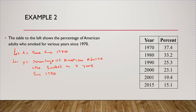I'm going to leave the percentage as-is rather than converting to a decimal. So my X variable will be: 1970 is zero years since 1970, 1980 is 10 years, 1990 is 20 years, then 30 years, 31 years, and 2015 is 45 years since 1970.